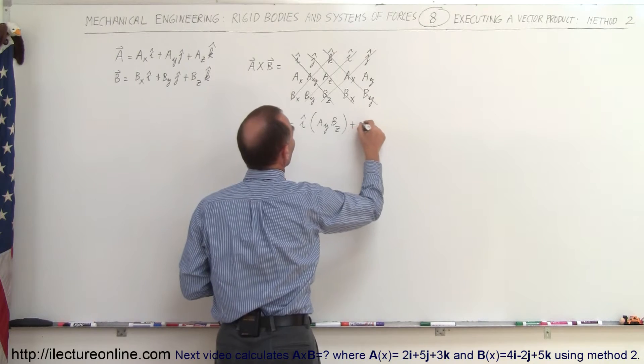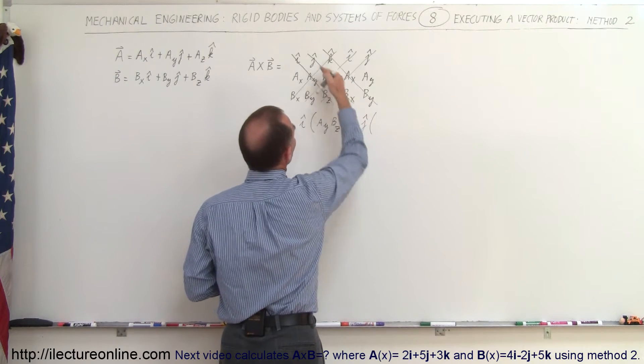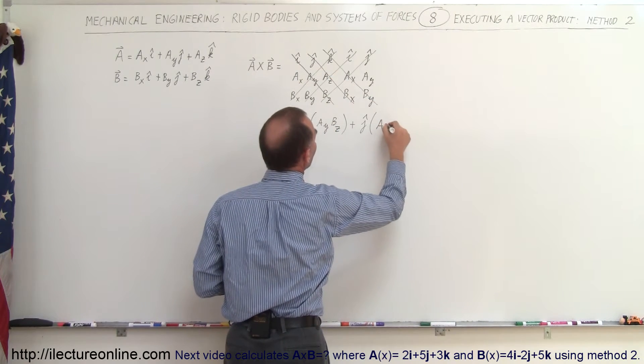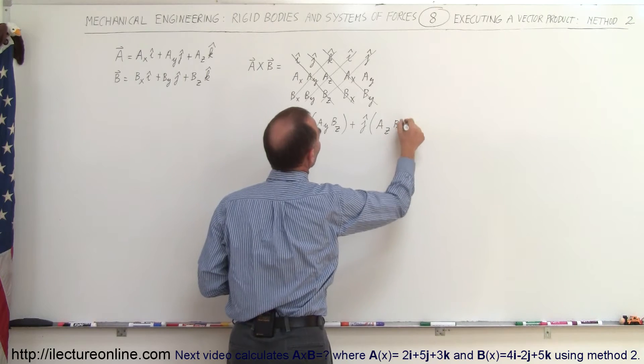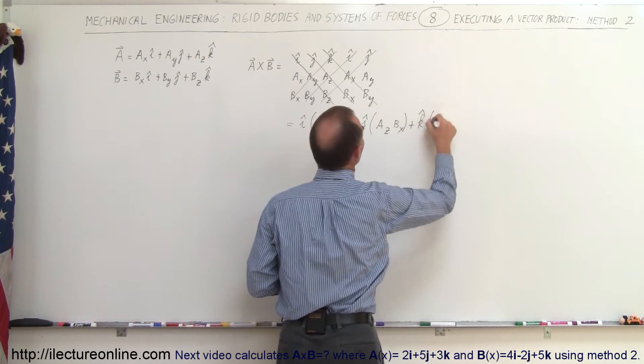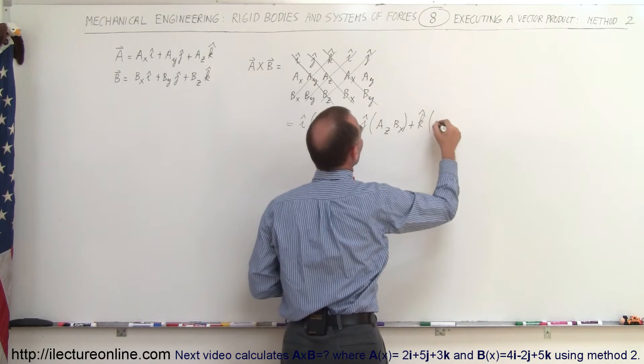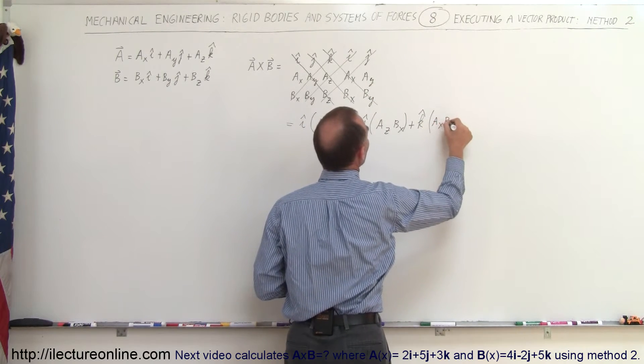So we take the next one is plus J times A sub Z B sub X, A sub Z B sub X, and then plus K, and again you multiply all these elements, so that would be A sub X times B sub Y.